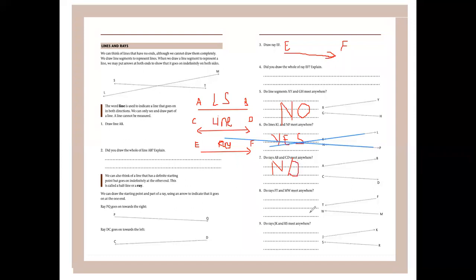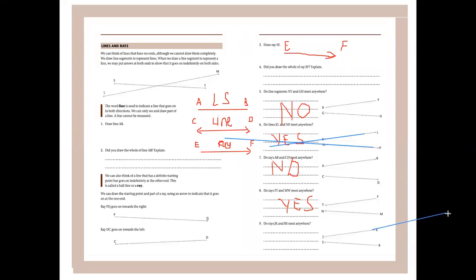Do rays FT and MW meet anywhere? Yes, they'll cross over somewhere. Do rays JK and RS meet anywhere? JK goes in one direction and RS goes in the other direction. They will not meet, because they go on infinitely in one direction but have definite starting points — this one goes on infinitely this way and that one goes on infinitely that way — so they do not cross. The answer is no.